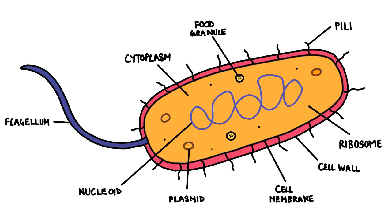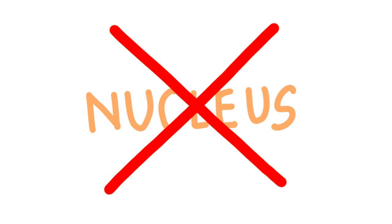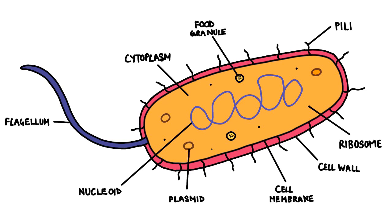Finally, the third cell type is a bacteria cell, which is part of a group of cells called prokaryotic cells. The main difference between prokaryotic and eukaryotic cells, which include plant and animal cells, is that prokaryotic cells do not have a nucleus. The bacteria cell shown here today will be an E. coli cell, which is rod-shaped. In the center of the cell is a nucleoid, or circular lobe of DNA.